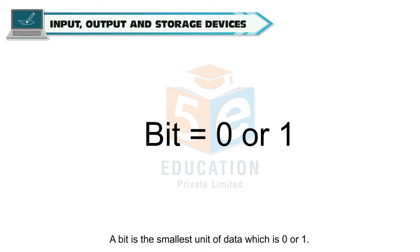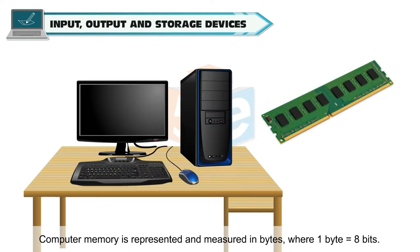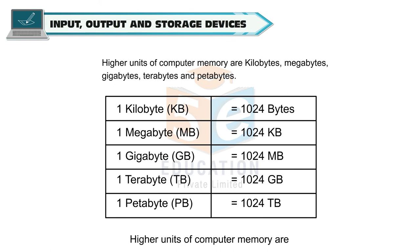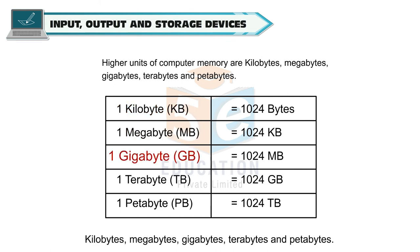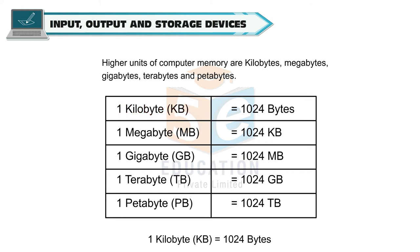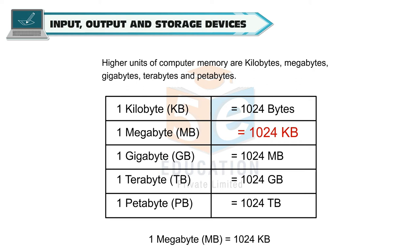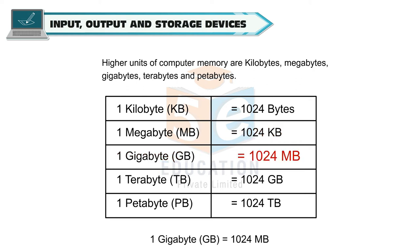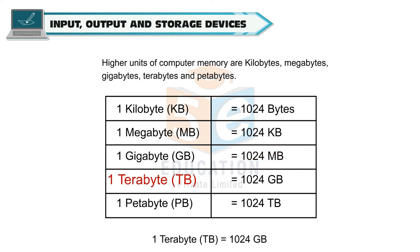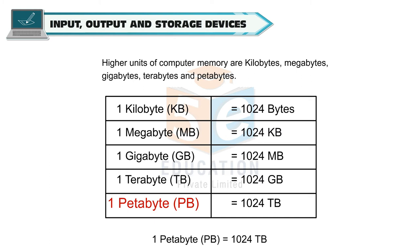A bit is the smallest unit of data, which is zero or one. Computer memory is represented and measured in bytes, where 1 byte is equal to 8 bits. Higher units of computer memory are kilobytes, megabytes, gigabytes, terabytes and petabytes. 1 kilobyte (KB) is equal to 1024 bytes. 1 megabyte (MB) is equal to 1024 kilobytes. 1 gigabyte (GB) is equal to 1024 megabytes. 1 terabyte (TB) is equal to 1024 gigabytes. 1 petabyte (PB) is equal to 1024 terabytes.